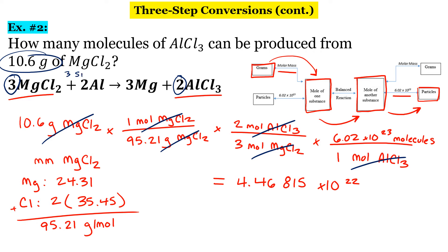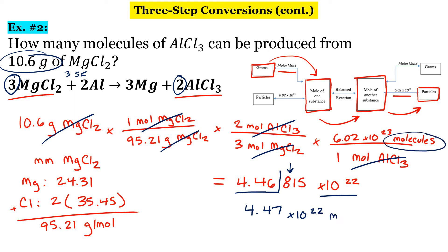We have three significant figures. Going from left to right, let's underline the first three significant digits and then look at the fourth — we're going to round up. This is going to be 4.47 times 10 to the 22nd. Our units are going to be molecules of aluminum chloride.